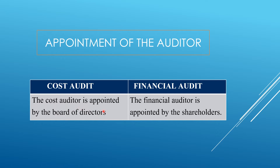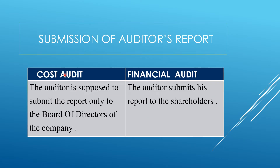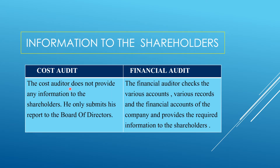Regarding appointment, the cost auditor is appointed by the board of directors, and the financial auditor is appointed by the shareholders. For report submission, the cost audit report is submitted only to the board of directors of the company and may also go to the central government. But the financial auditor submits his report to the shareholders and provides them the required information from the financial accounts of the company.